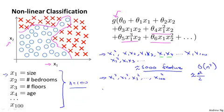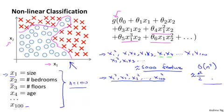But this is not enough features, and certainly won't let you fit a dataset like that shown on the upper left. In fact, if you include only these quadratic features together with the original x1 through x100 features, you can't actually fit very interesting hypotheses. You can fit things like axis-aligned ellipses, but you certainly cannot fit a more complex dataset like the one shown here.